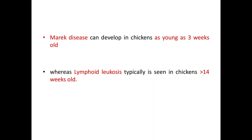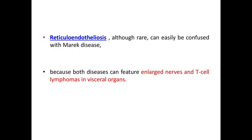In lymphoid leucosis there are bursal tumors, but in Marek's disease bursal tumors are absent and the bursa is more frequently atrophic. Marek's disease can develop in chickens as young as 3 weeks old, whereas lymphoid leucosis is typically seen in chickens more than 14 weeks old. These are the two main differences: bursal tumors and the age of the infected chicken. Reticuloendotheliosis, although rare, can easily be confused with MDV because both diseases can feature enlarged nerves and T cell lymphomas in visceral organs.